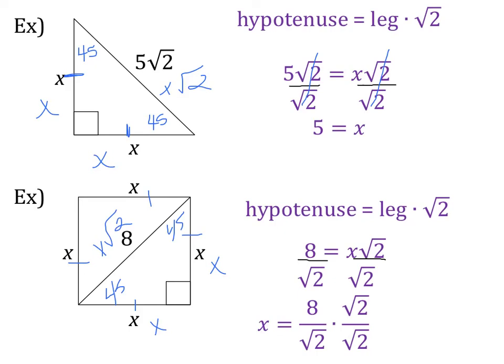So if we multiply our fraction by the square root of 2 over the square root of 2, then on the bottom the square roots will cancel out and we'll have 2. And so we're left with 8 square root of 2 over 2, which will then simplify to 4 square root of 2.